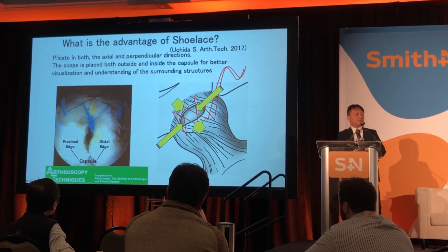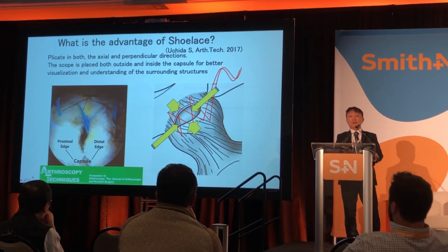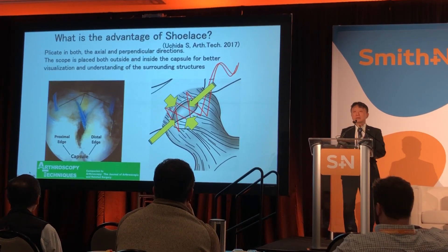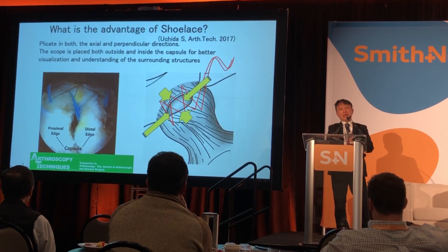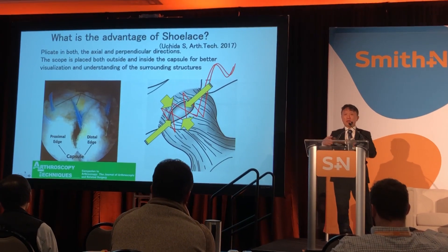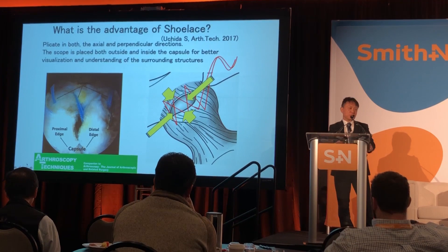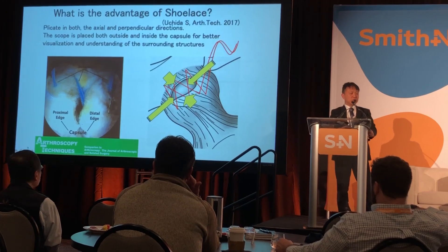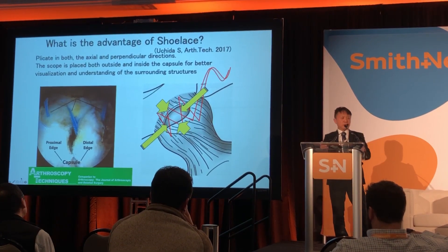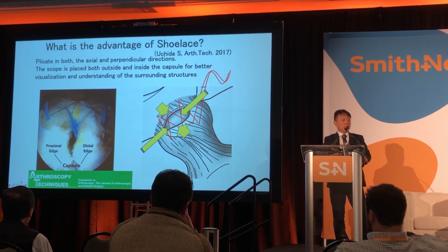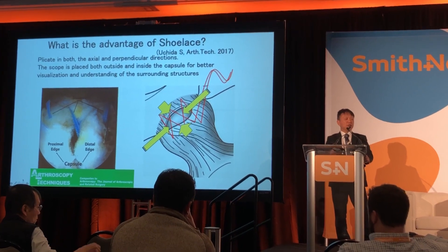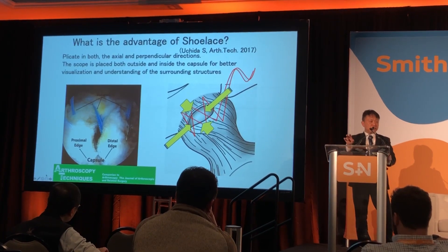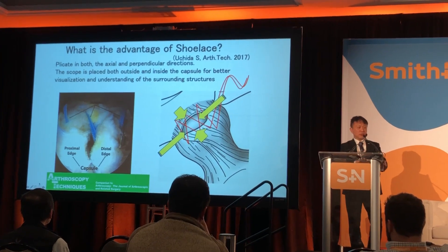Capsular plication is my favorite procedure because in Japan we have many joint hypermobility patients. Even though complete capsular closure problems exist and some patients have failed hip arthroscopy despite complete capsular repair, I created a device for these capsular plication procedures. We utilize FiberTape from Smith & Nephew, and the advantage is it replicates both axial and perpendicular directions. The scope is placed both outside and inside for better visualization and understanding of surrounding structures.